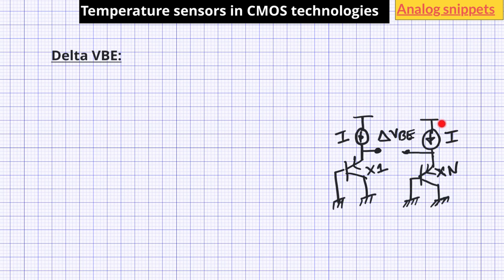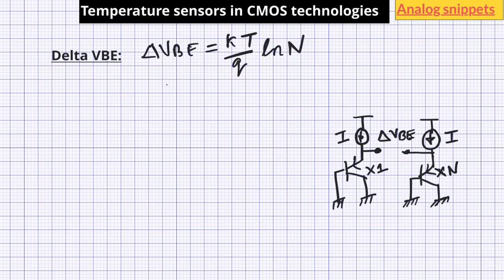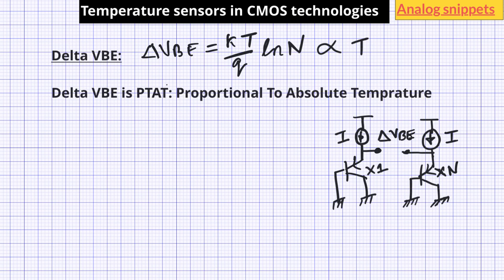Let's now look at delta VBE as a temperature sensor. Consider two sets of BJTs biased at similar currents: one BJT is a single device while the other has N devices connected in parallel. The voltage across the parallel device will be smaller, and this difference in VBE is known as delta VBE, given by the equation: delta VBE = (KT/Q) × ln(N), where K is Boltzmann's constant, Q is the charge of the electron, T is absolute temperature, and N is the ratio between the two BJTs. Ignoring mismatch, N is a constant along with K and Q, so delta VBE is directly proportional to absolute temperature — this is known as PTAT, or proportional to absolute temperature. Since K and Q are fundamental constants and N is a ratio of similar devices, there is no process dependence, making this value very accurate.